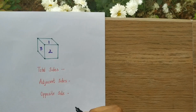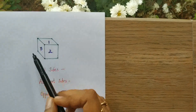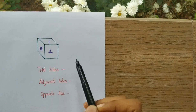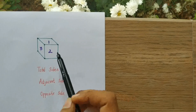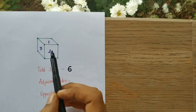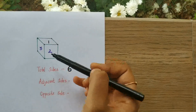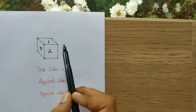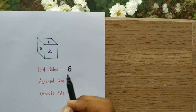In order to understand a cube, we should understand its sides and basics first. Let's consider this as a cube. How many total sides are there in a cube? We have six sides: one, two, three, and the back side of two, back side of three, and the opposite side of one.